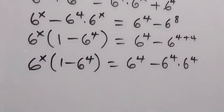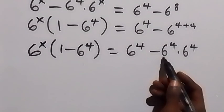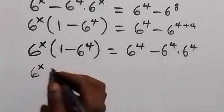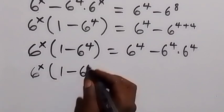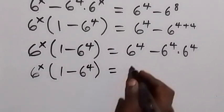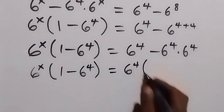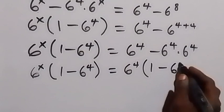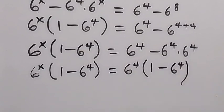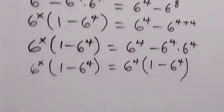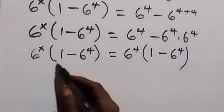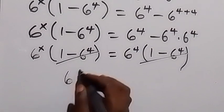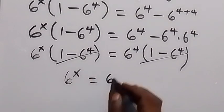From here let's also factor out 6 raised to power 4 from the right side. We have 6 raised to power x times bracket 1 minus 6 raised to power 4, equals 6 raised to power 4 times bracket 1 minus 6 raised to power 4. Since 1 minus 6 raised to power 4 appears on both sides, we divide through and it cancels out, leaving 6 raised to power x equals 6 raised to power 4.